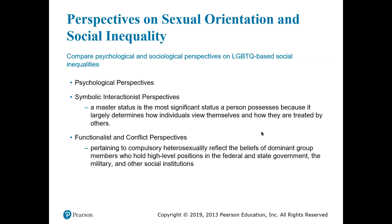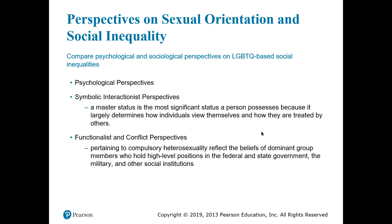First, people experience identity confusion. The second stage involves establishing a lesbian or gay identity, seeking out others who are openly lesbian or gay, and perhaps engaging in sexual experimentation. Third, people attempt to integrate their sexual identity as gay, bisexual, or lesbian by pursuing a way of life that conforms to their definitions of those labels. A major criticism of this perspective involves its reliance on studies based on a relatively narrow selection of people.